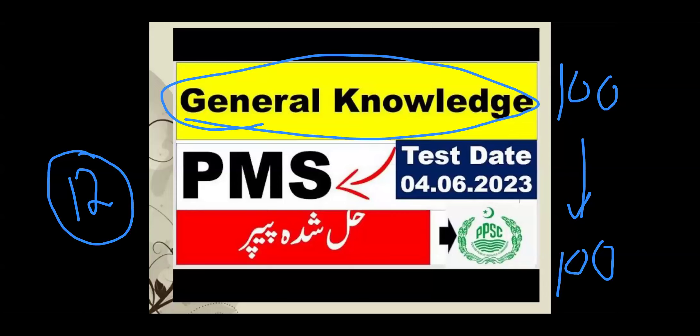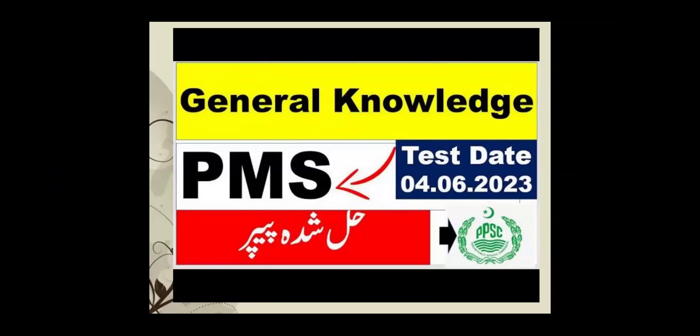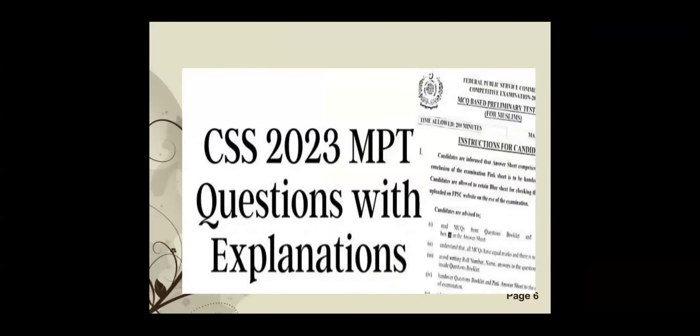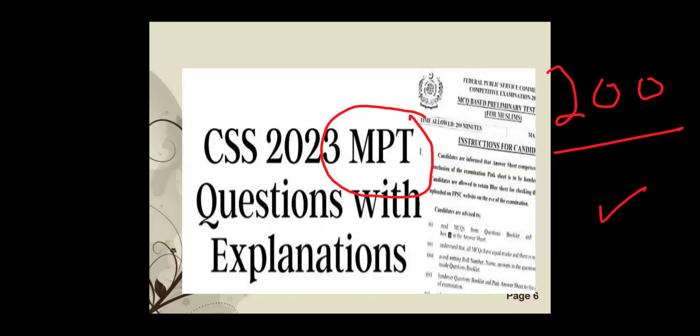General Knowledge is one paper, MCQ-based, and if you prepare for this one paper, you can also cover the PMS paper. Similarly, CSS has an MPT screening test — 200 marks, MCQ-based. If you clear this, you can move to the next category of subjective papers. This session we are running will prepare you for CSS MPT test as well — no separate preparation needed.